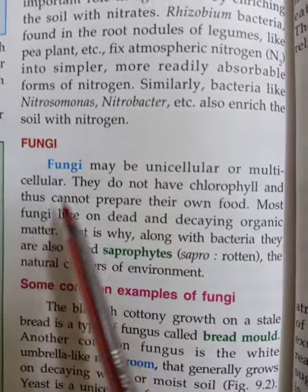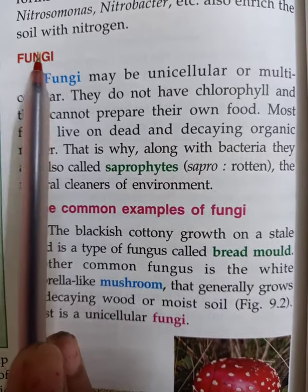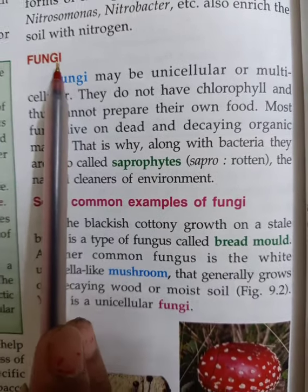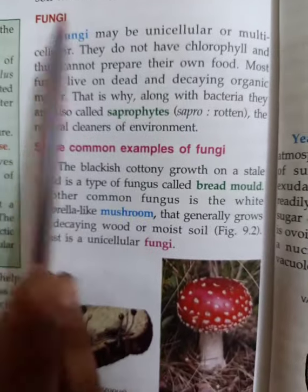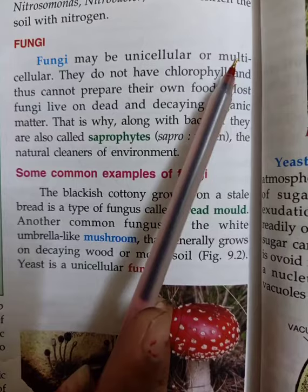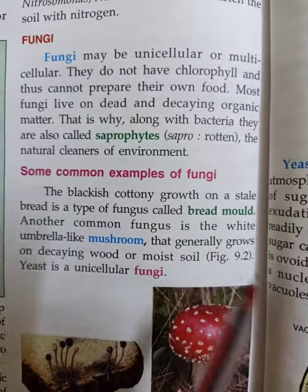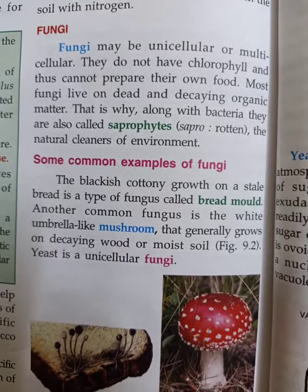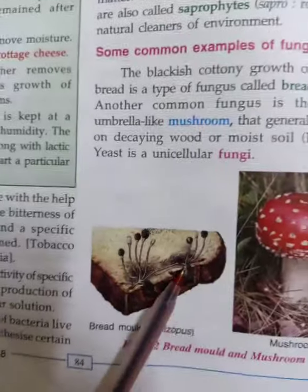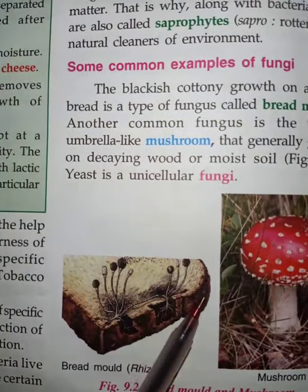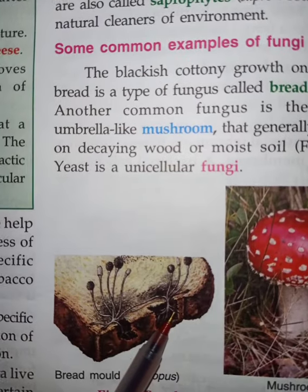Today we are going to take the second microorganism, that is fungi. Bacteria are unicellular organisms, but fungi may be unicellular or multicellular. If you open your book to page number 84, you can see a bread with some blackish spots on it. These blackish spots are fungi.